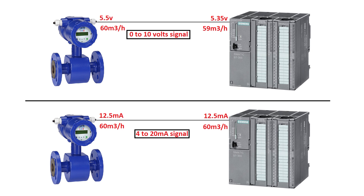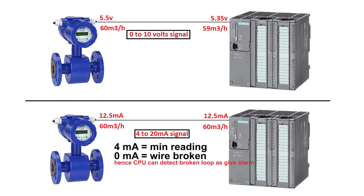With a 0 to 10 volt signal, we cannot detect if a reading of 0 is a minimum reading or if the wire is cut. However, in a 4 to 20 milliamp signal, 4 milliamps is the minimum reading and 0 milliamps indicates an open circuit due to power loss or a cut wire.